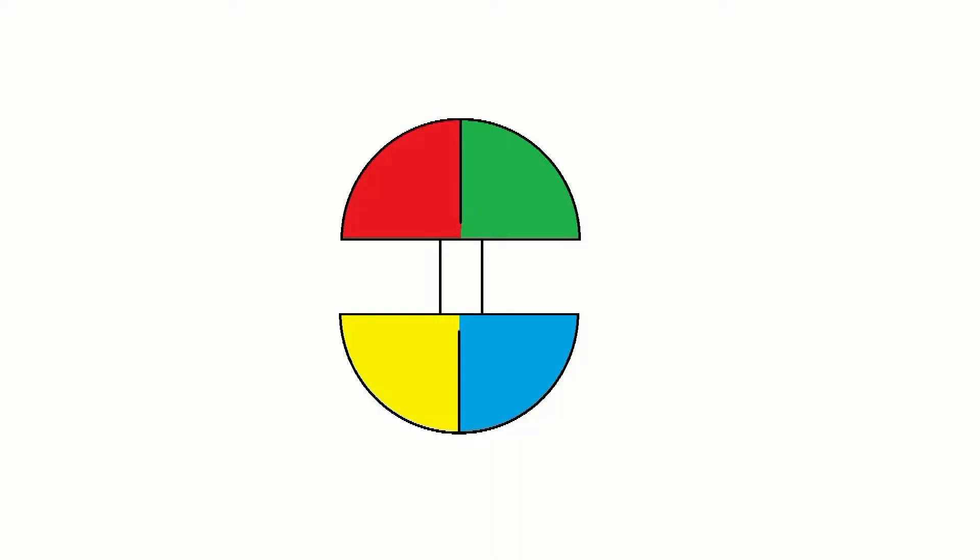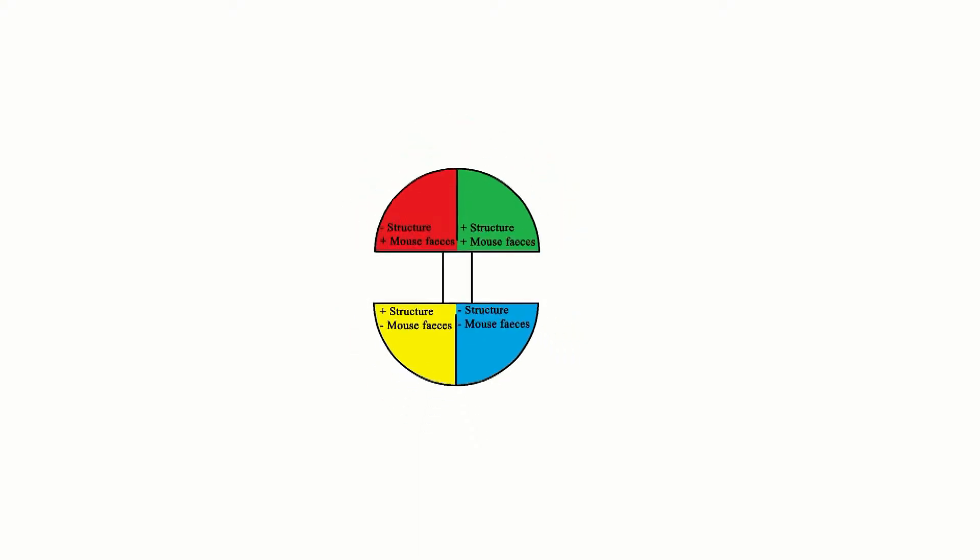The first factor, treatment, consists of four levels known as the compartments within the boxes. These compartments are no structure with mouse feces, structure with mouse feces, structure without mouse feces, and no structure and no mouse feces or the control experiment.